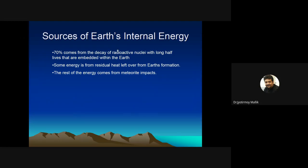70% of the Earth's internal energy comes from the decay of radioactive nuclei with long half-lives that are embedded within the Earth, so the major source of heat is radioactive decay. Some energy is from the residual heat of the Earth's formation — the Earth was at a very high temperature when it formed and is slowly decreasing in temperature as it returns to equilibrium. The rest of the energy comes from meteoritic impacts.